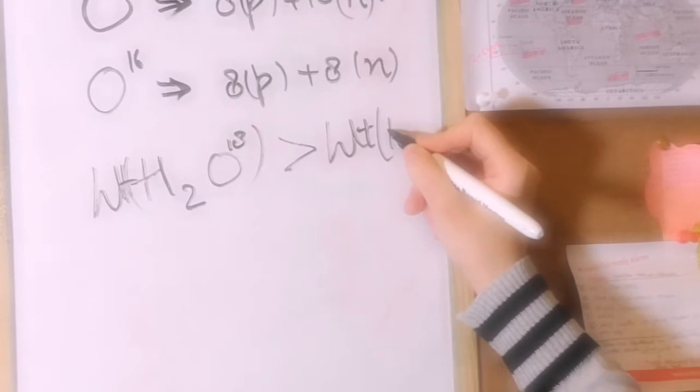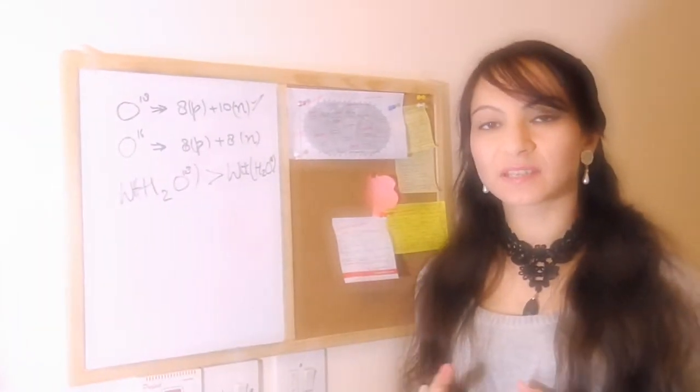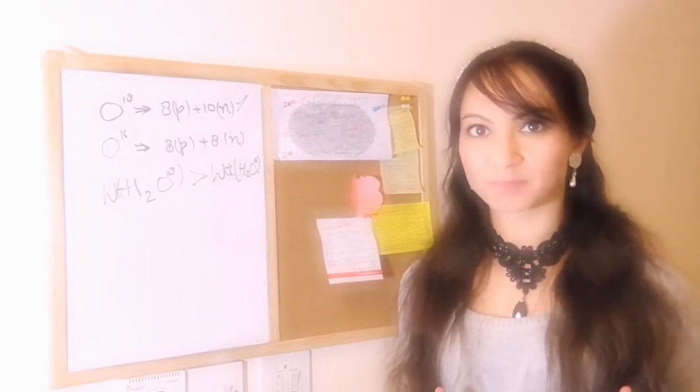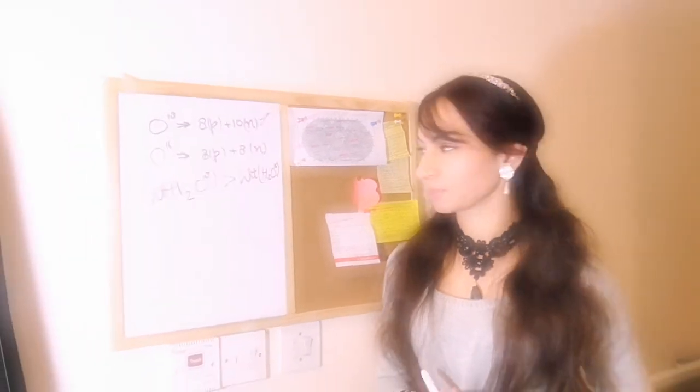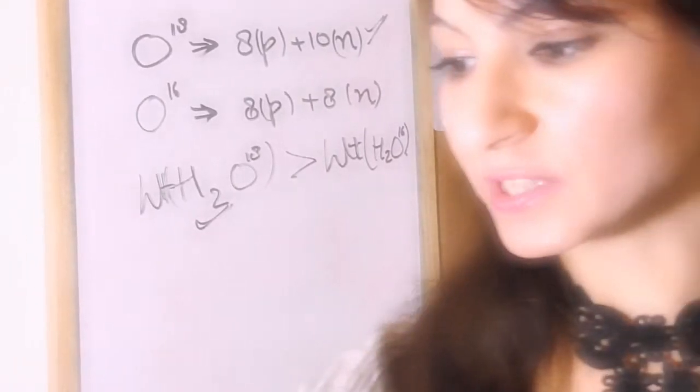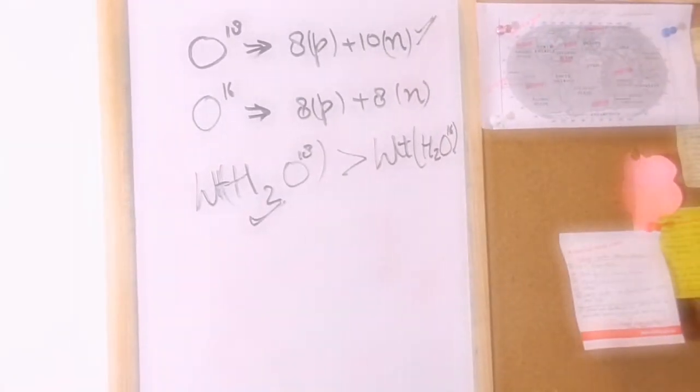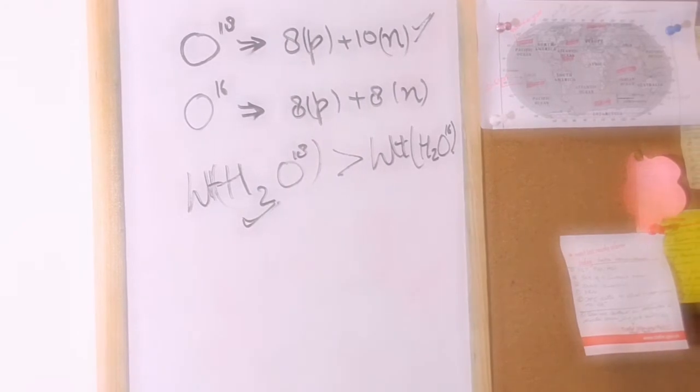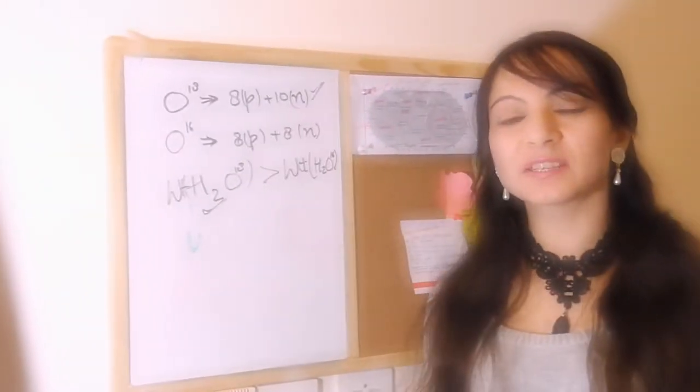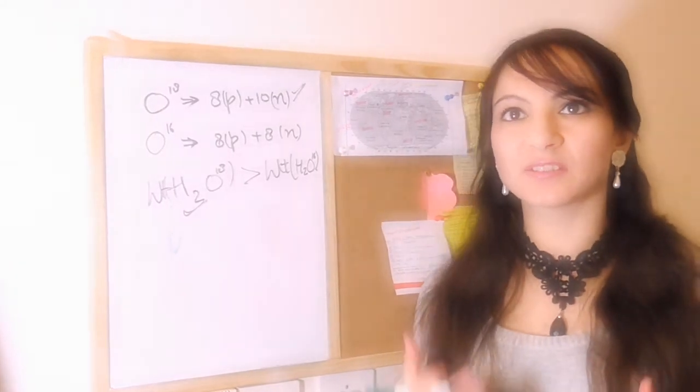Okay, now since there is a difference in the weight, there would be difference in the evaporation and the vapor pressure. As you know, this H2O-18 has higher weight than H2O-16, which would mean that this molecule here would be more attracted towards the gravity. When it is more attracted towards the gravity, it's difficult or it needs more energy to go up into the sky by evaporation.